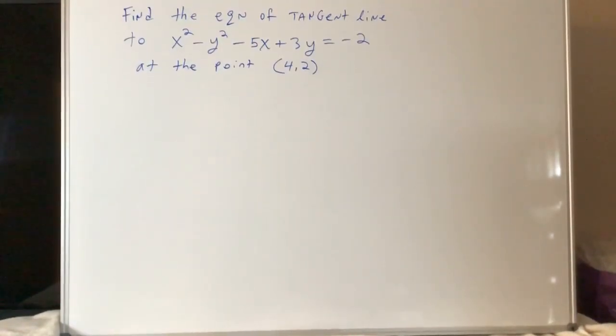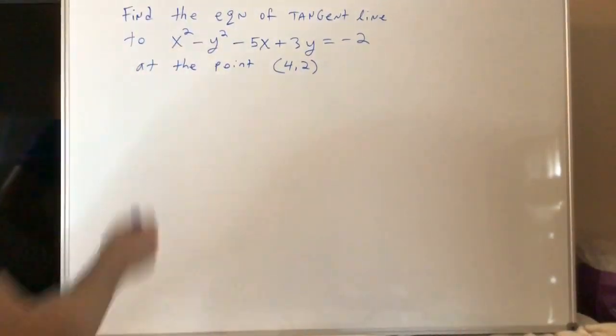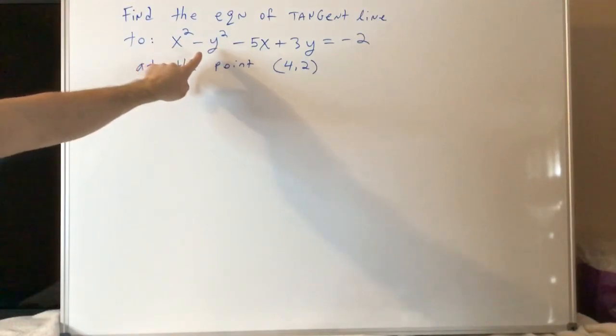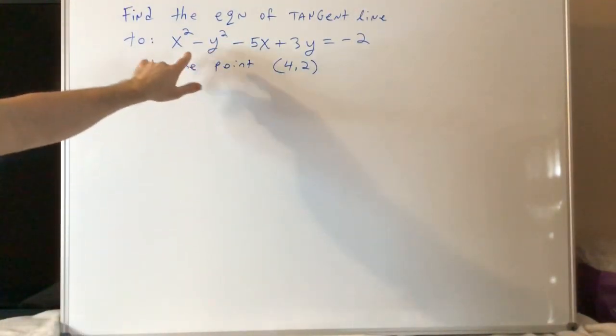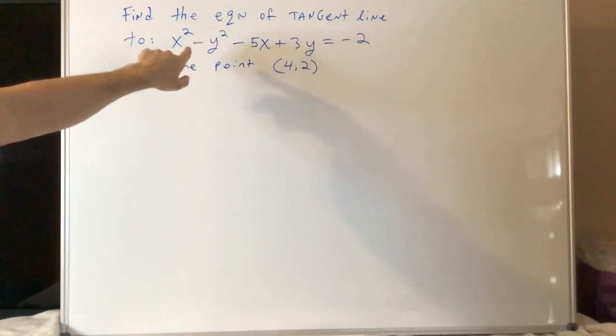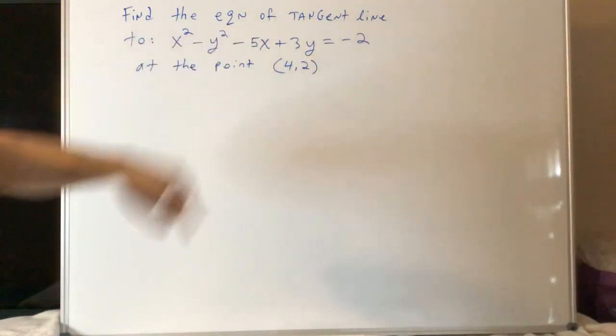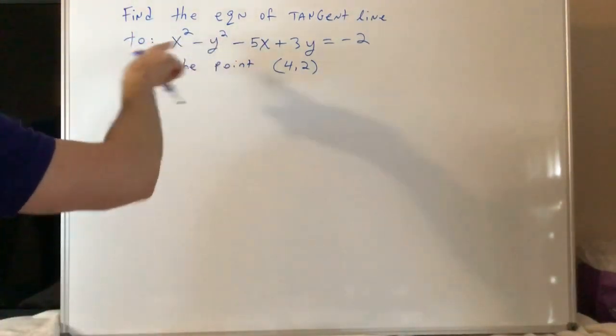Okay, so here's the example. Find the equation of a tangent line to x squared minus y squared minus 5x plus 3y equals negative 2. If you were to plug x is 4 and y is 2 into this equation, you would get negative 2. So now I'm going to take the derivative of both sides.